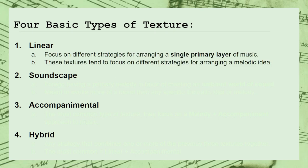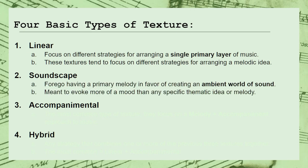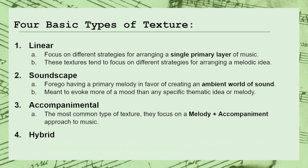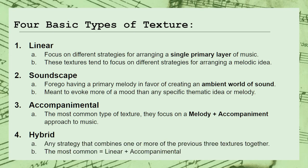The linear textures focus on different strategies for arranging a single primary layer of music — in other words, different strategies for arranging a melody. The soundscape textures are the opposite; they forego any primary melody in favor of creating an ambient world of sound, meant to evoke more of a mood than any specific thematic idea. The accompanimental textures are the most common and useful, focusing on a melody plus accompaniment model. Finally, the hybrid textures refer to any strategy for combining any of the previous three, with the most common type being linear and accompanimental.